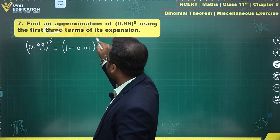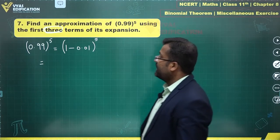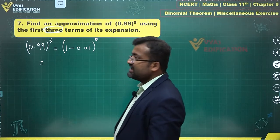1 minus 0.01 power 5 and this is the expansion that we are looking at. So what is this expansion?